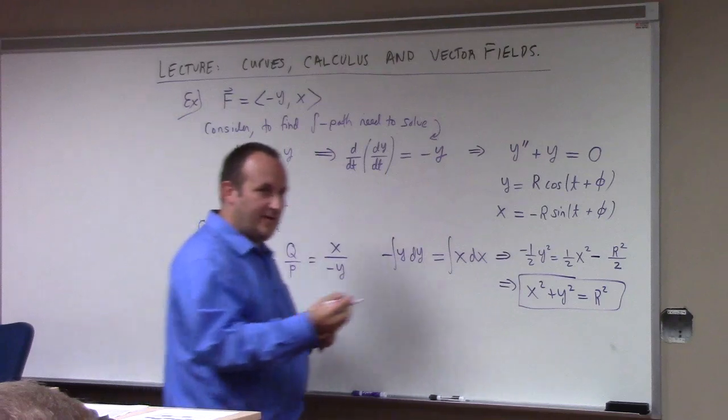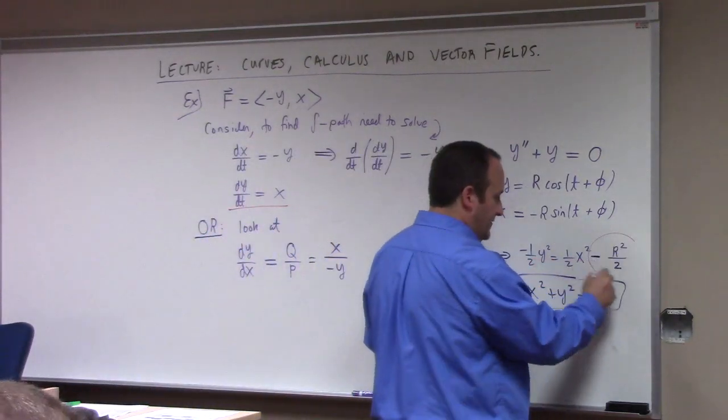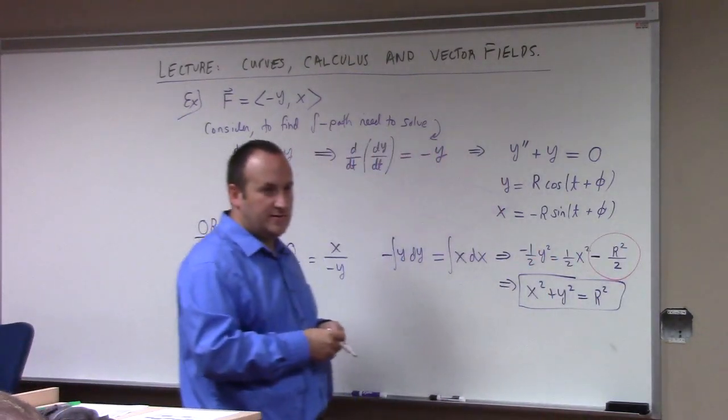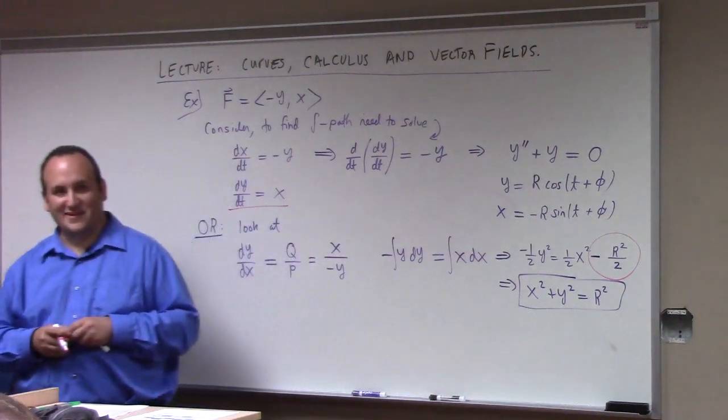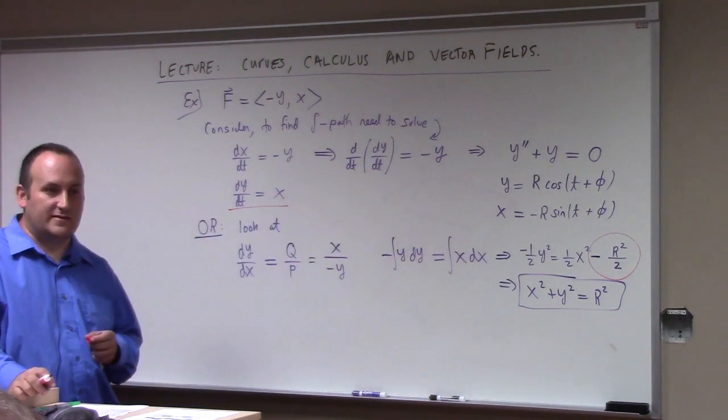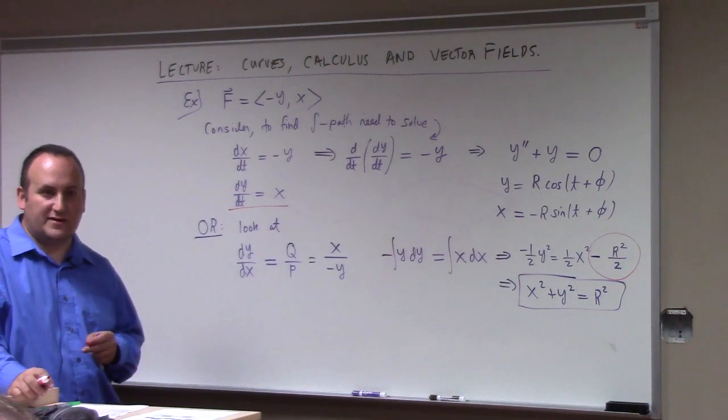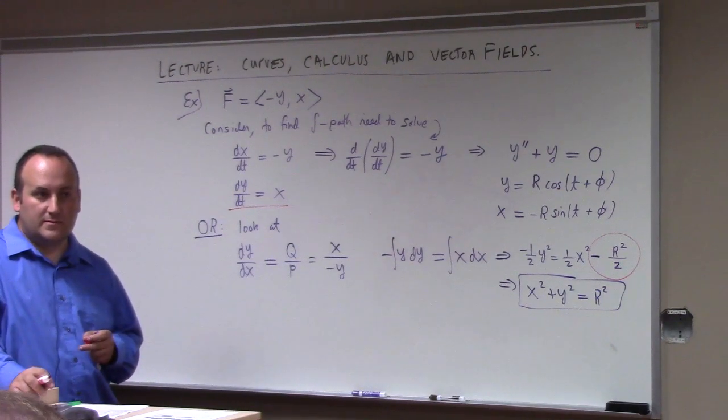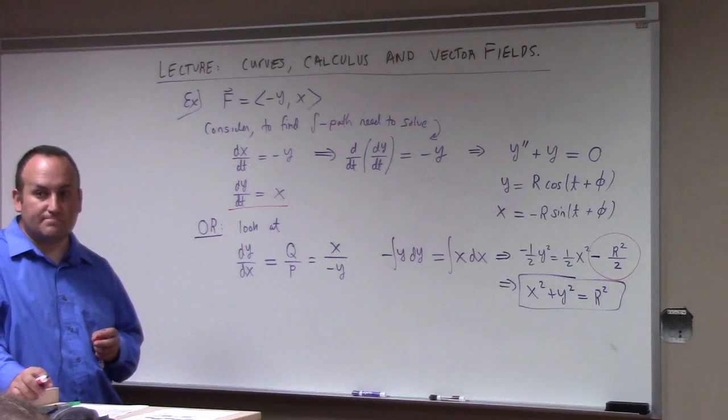Writing the constant as I did right here, that was just me messing around. You could say plus k and then solve it. You'd be led to the conclusion that k has to be positive or negative depending on where you put it because you've got a sum of squares, which is non-negative.